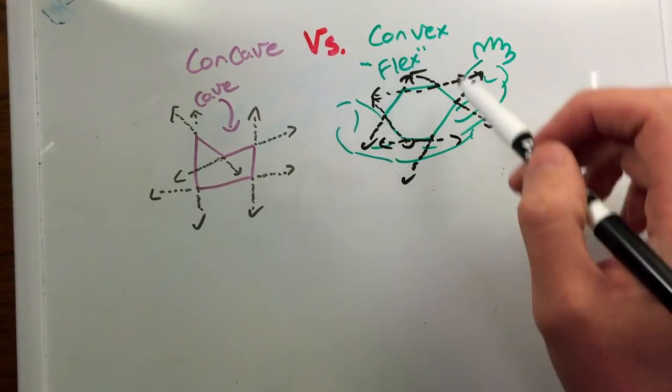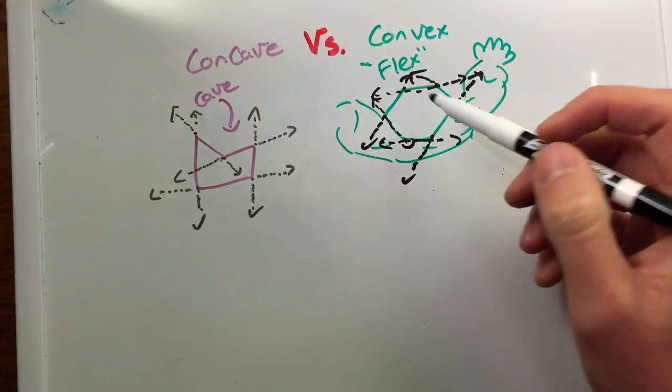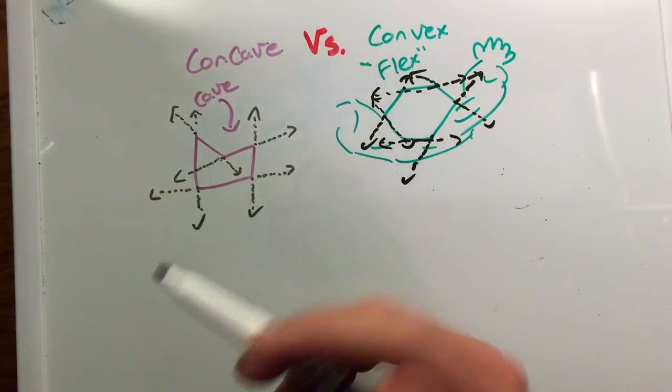But a quick way to remember is convex is you're flexing, the muscle is always protruding outwards. And concave is making a little cave here to hang out in.